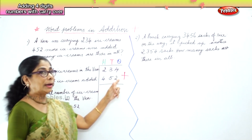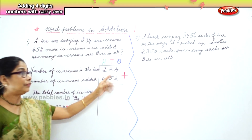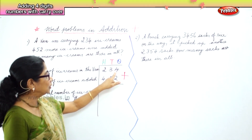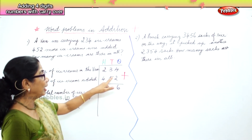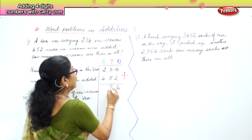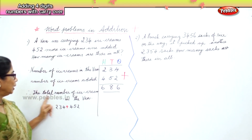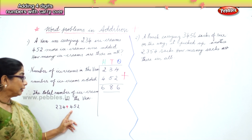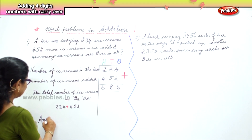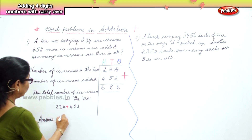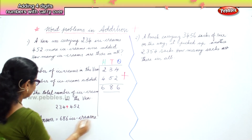First we add the ones. Number of ice creams in the van: 234. Number of ice creams added: 452. We have 4 in the ones place and 2 in the ones place — 4 plus 2 gives us 6 ones. In the tens place we have 3 and 5 — 5 plus 3 is 8. In the hundreds place we have 2 and 4 — 2 plus 4 is 6. So the total number of ice creams: 234 plus 452 is 686. Your answer is equal to 686 ice creams.